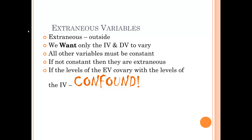Extraneous variables — extraneous means outside. We want only the IV and the DV to vary. All other variables must be held constant. If not constant, they're extraneous variables. Anything that varies in an experiment which is not the IV or the DV is, by definition, an extraneous variable. Finally, if the levels of the extraneous variable co-vary with the levels of the IV, that's a confound — and as you can tell by the font I've used, it's probably not a good thing.